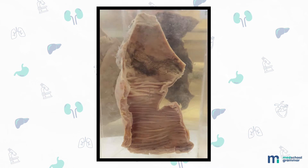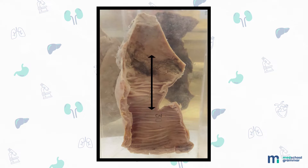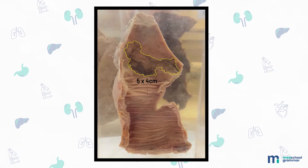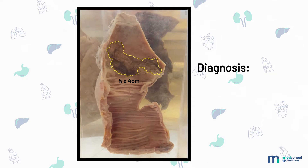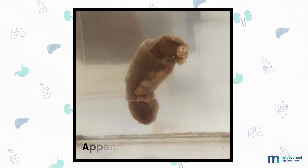Next we have a specimen of the intestine measuring 30 centimeters in length. The serosa is congested and nodular. The mucosa shows a broad ulcer measuring 5 by 4 centimeters at the upper end and is hemorrhagic in appearance. Our diagnosis: this is a specimen of bacillary colitis.